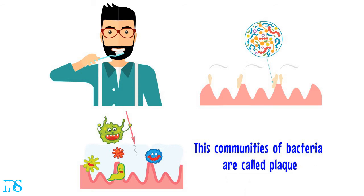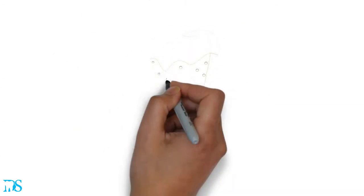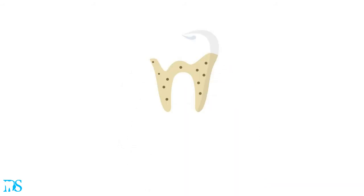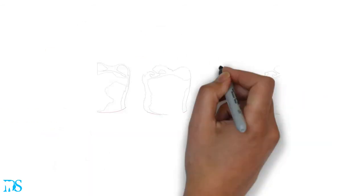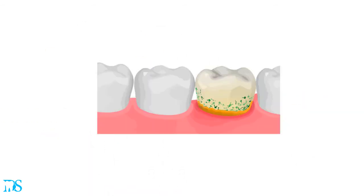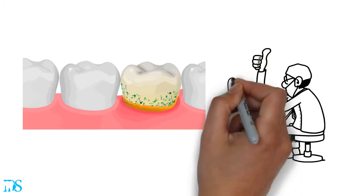And after just one week, minerals in your saliva can cause this plaque to harden, turning this plaque into calculus. And no, I'm not talking about your high school math class. Once you have calculus, you can't remove it with a toothbrush. The only way to get rid of it is to go in for your dental cleaning.